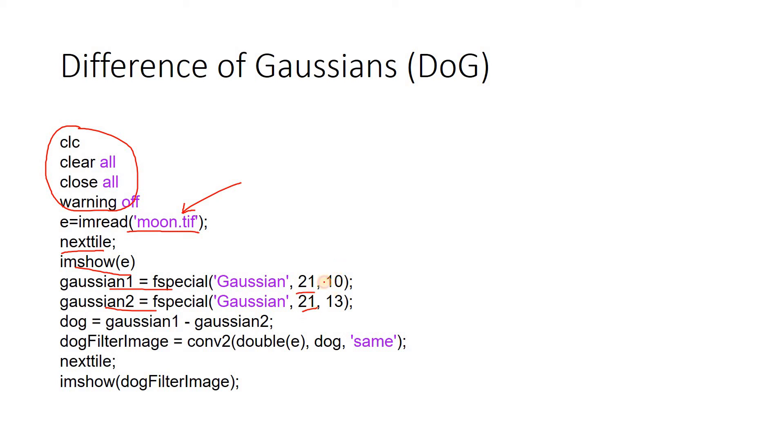Then I am showing that image. I am creating two different Gaussian filters using fspecial having same size, 21 by 21. But for one, the standard deviation is 10. For another one, standard deviation is 30. And now how I told you to generate DoG? The idea is the same thing. We basically subtract two Gaussian kernels having different SD. So Gaussian 1 minus Gaussian 2 we are doing here. Then these filters we can do convolution with our input image. DoG filtered image equals conv2. Why conv2 not conv? Because conv is used for one dimensional signal. This is an image, two dimensional, because moon.tif is grayscale.